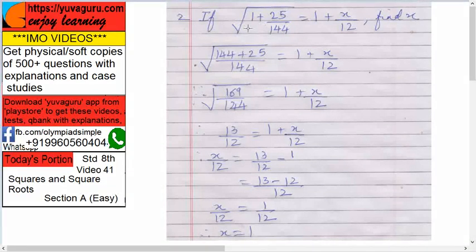First, bring the same denominator: so 144 into 1 is 144 plus 25 upon 144, the whole square root, equals to this side. So this is 169. Square root of 169/144.